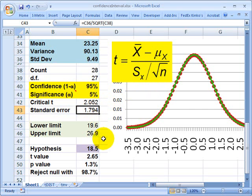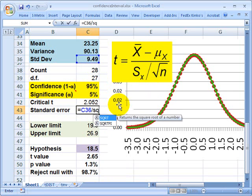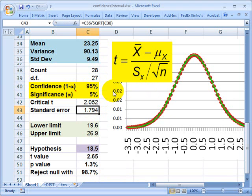It's the sample standard deviation divided by the square root of n. N is the sample size. So, if I recreated this, I start with an equals for the function, the sample standard deviation divided by the square root of the sample size, not the degrees of freedom. And I get 1.794. In yesterday's tutorial, I constructed a confidence interval.